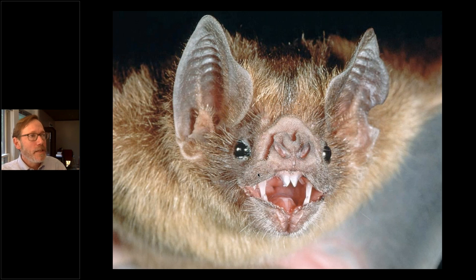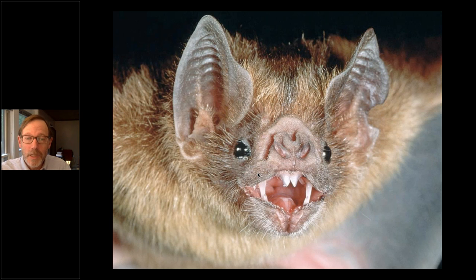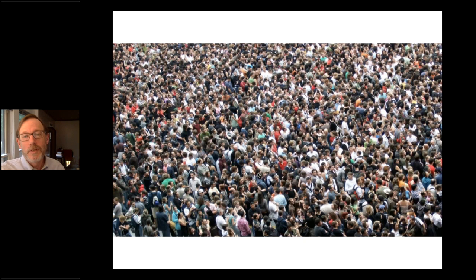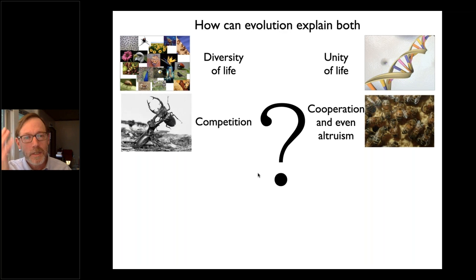Belding's ground squirrels emit alarm calls when there are predators nearby, specific to the type of predator, and they do this especially when close relatives are nearby — putting themselves in danger, acting altruistically. Vampire bats drink blood but also share meals: bats that were fed will regurgitate blood to those who are unfed, even unrelated bats — giving up something for the colony. Humans, too, hold that duality. So how can evolution explain both competition and its opposite — cooperation and even altruism?